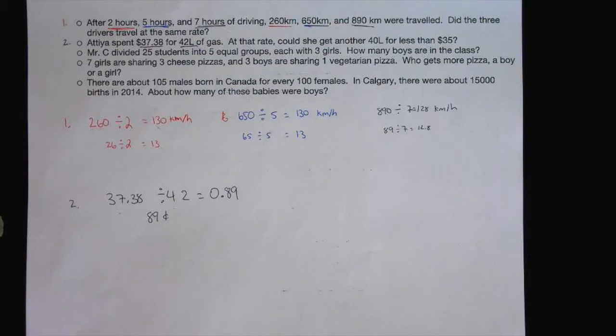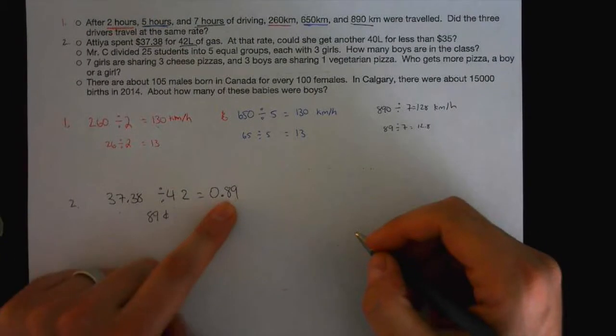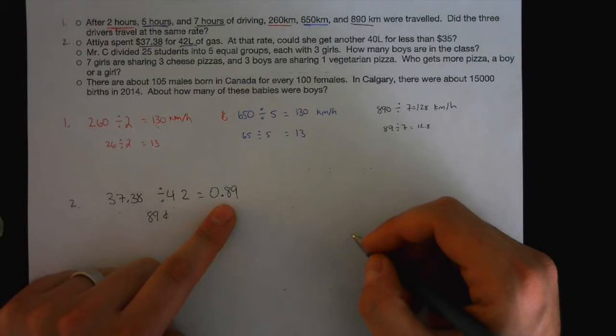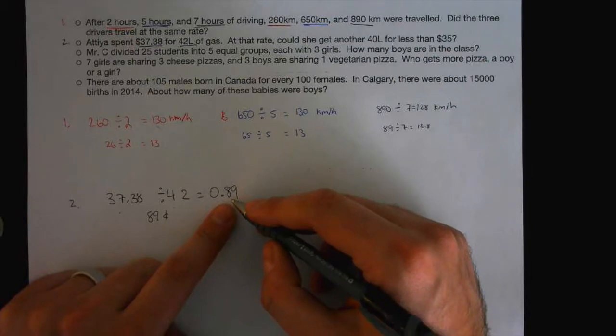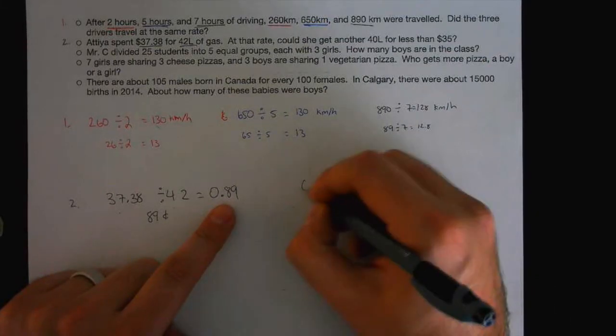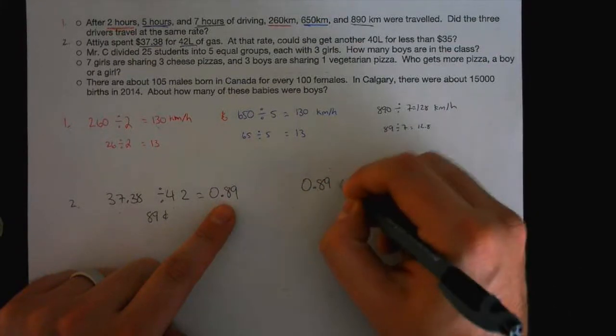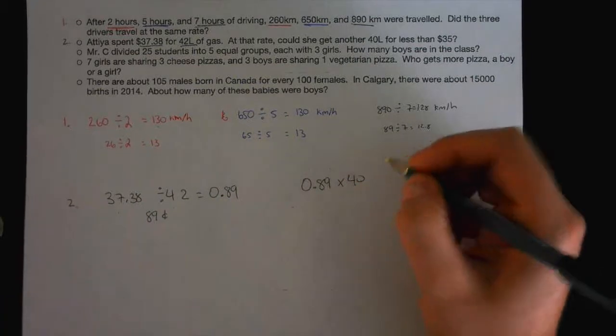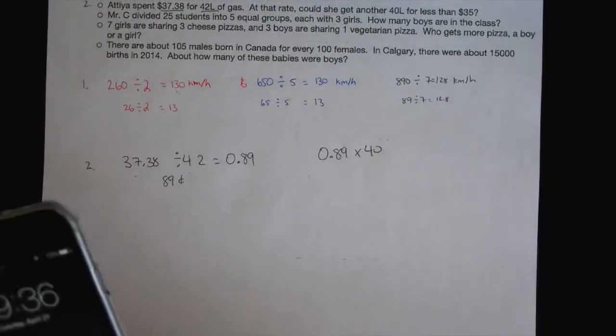What do I multiply by 40? What do I need to multiply 40 by? Atiyah? And why are you multiplying it by 0.89? 0.89 is for 1 liter. That's how much gas costs. I don't know what it costs this morning, but it's 89 cents a liter. You have to multiply this by 40.